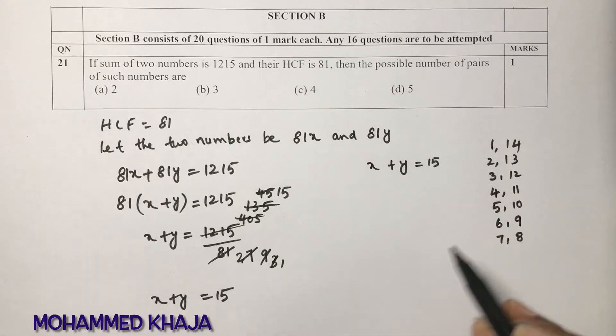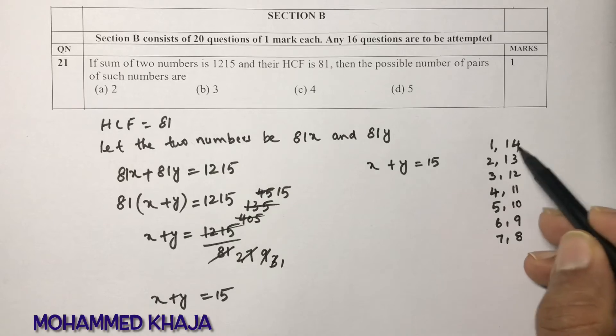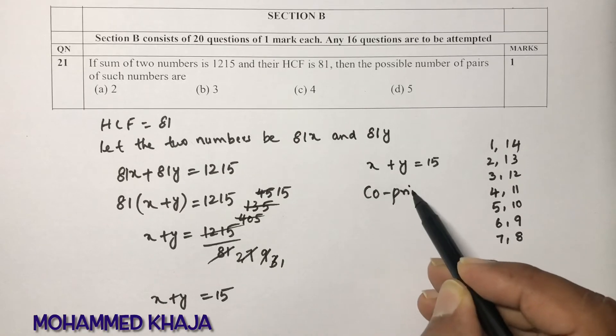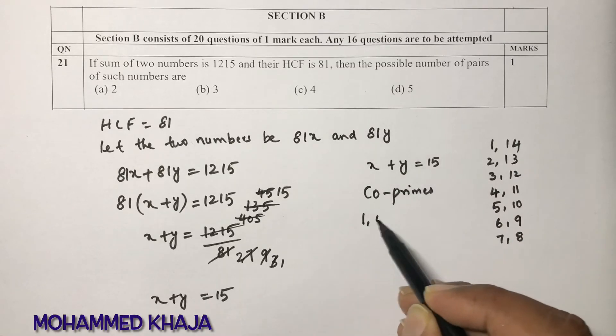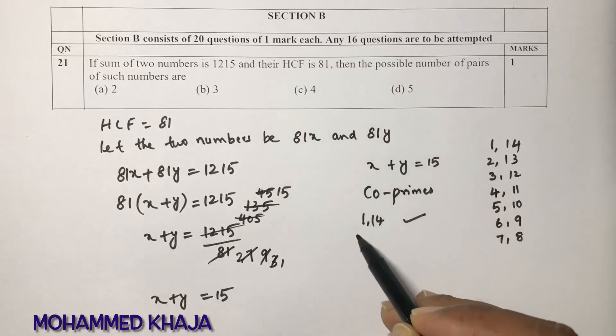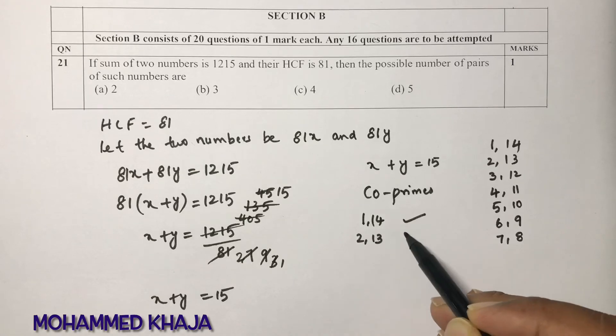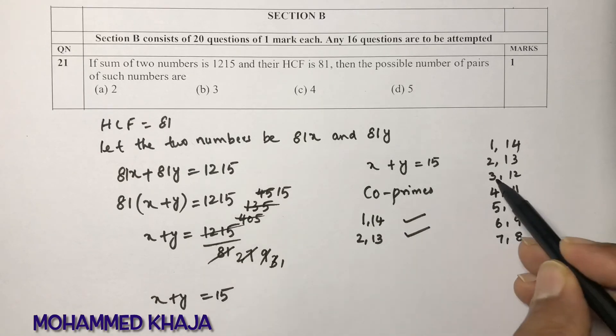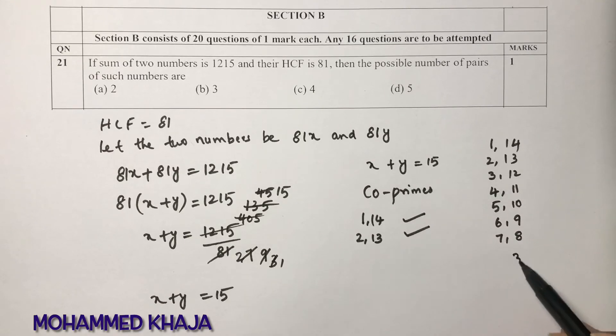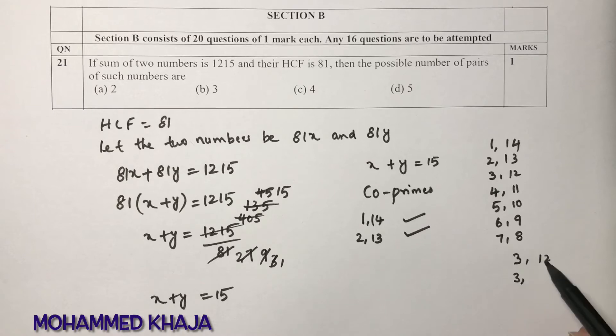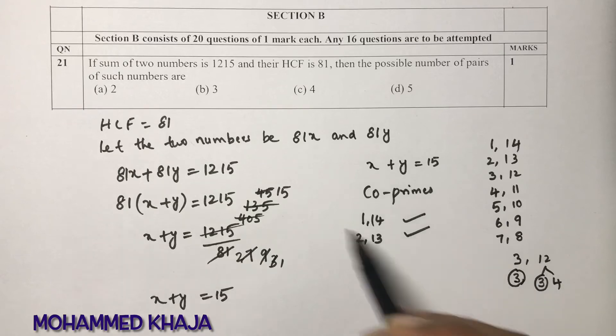But in this you need to select co-primes only. 1 and 14 is one pair. 2 and 13 are co-primes. 3 and 12 I cannot take because if you take 3 and 12, the common factor is 3. You can write 12 as 3 into 4, so the common factor again is 3.